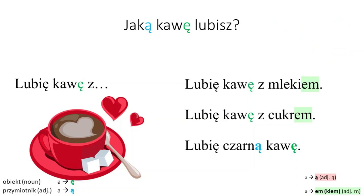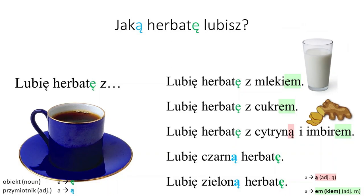In English you say 'lubię kawę z mleko' — you don't change anything. But in Polish you have to change: after lubię, accusative; and z, instrumental. Examples: Lubię kawę z mlekiem. Lubię kawę z cukrem. Lubię czarną kawę. Now herbata — Jaką herbatę lubisz? Lubię herbatę z mlekiem. Lubię herbatę z cukrem. Lubię herbatę z cytryną i imbirem. Lubię czarną herbatę. Lubię zieloną herbatę.